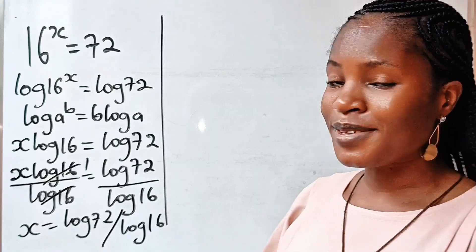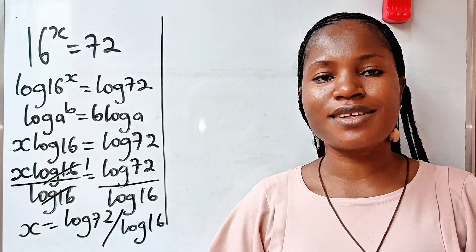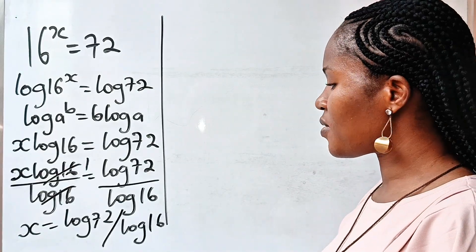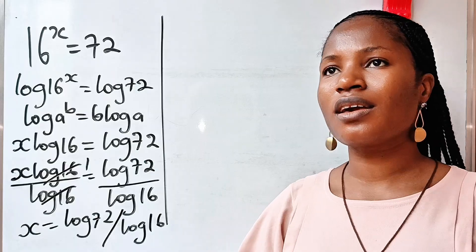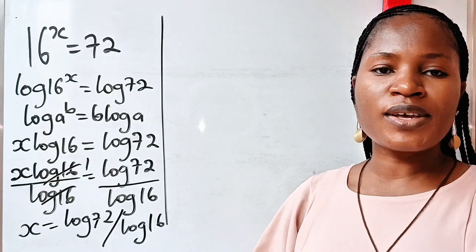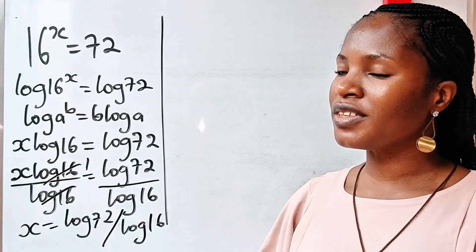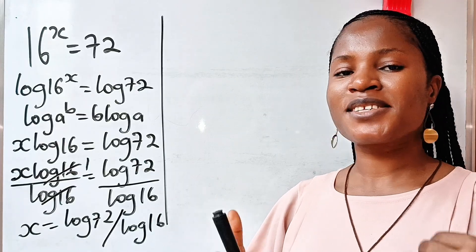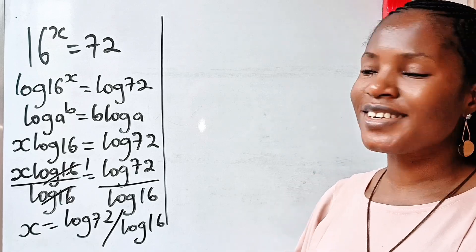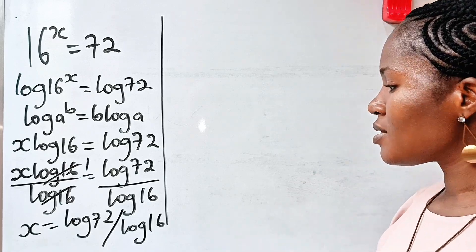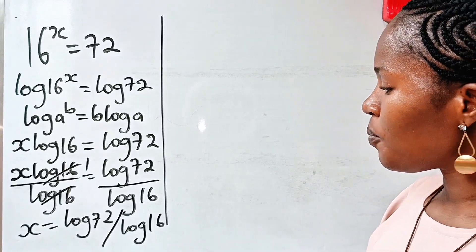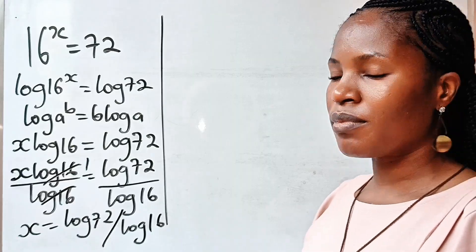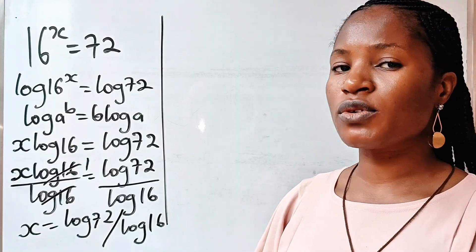Please click the subscription button and turn on your notification bell if this is the first time you've seen us. Give us a thumbs up if you're enjoying this video. Thank you very much. Now note that 72 can be written as 8 multiplied by 9.